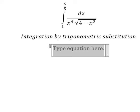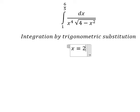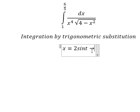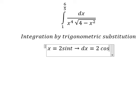I will put x equal to 2 sin(t). Because if I substitute this, we have 4 sin²(t). We can do factorization: 1 minus sin²(t) we change by cos²(t). Then we simplify the square root. Now we do the first derivative for both sides, and we have dx equal to 2 cos(t) dt.